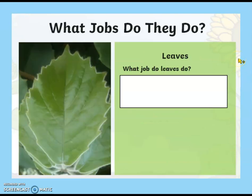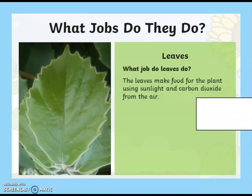What do the leaves do? The leaves make food for the plant using sunlight and carbon dioxide from the air. Carbon dioxide is a gas that's all around us. Over the next couple of weeks, we're going to be learning a little bit more about how plants make food using sunlight and carbon dioxide.